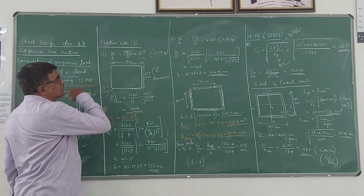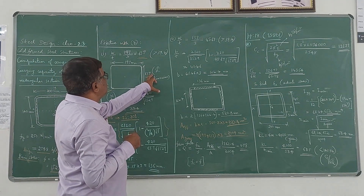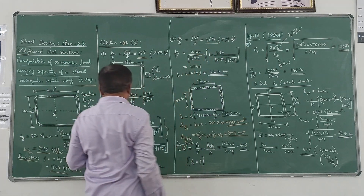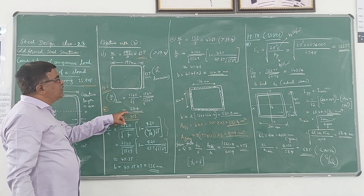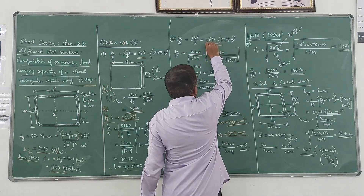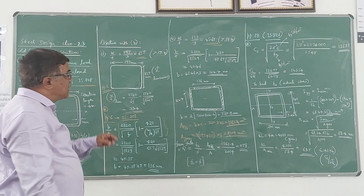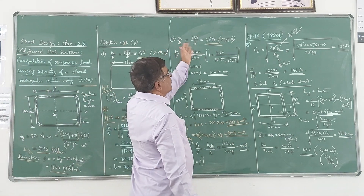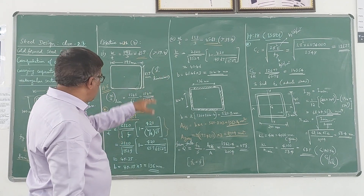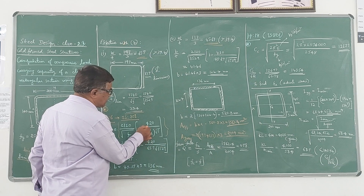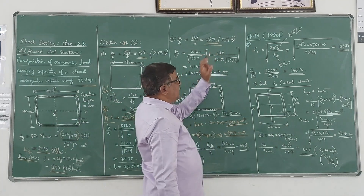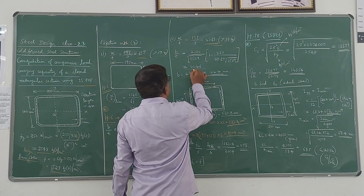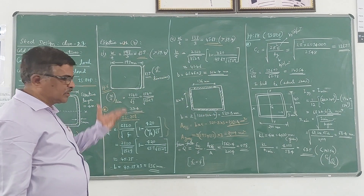Coming to the Y direction: W/T = 137 ÷ 3 = 45.67. Comparing with the limiting value once again, it is greater, so the same formula applies. If it were less, then B would equal W (i.e., B = 137mm). Since it is greater, substituting W/T = 45.67 into the formula gives B/T = 41.46. Therefore B = 41.46 × 3 = 144.4mm along the Y direction.